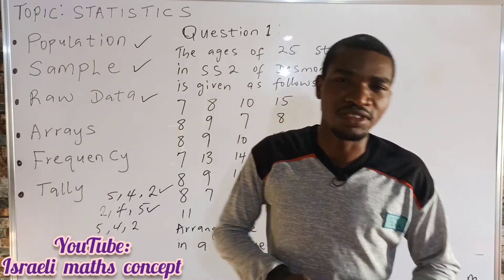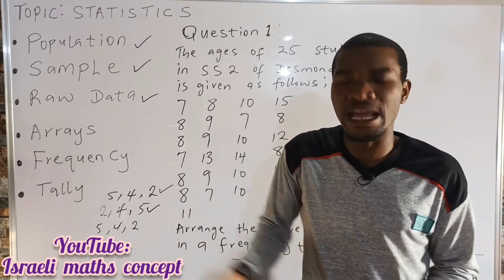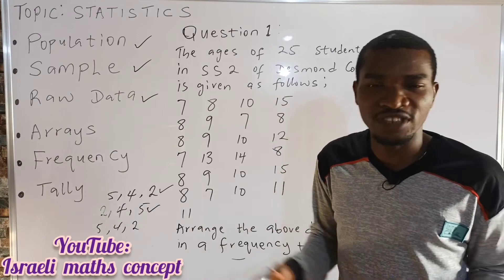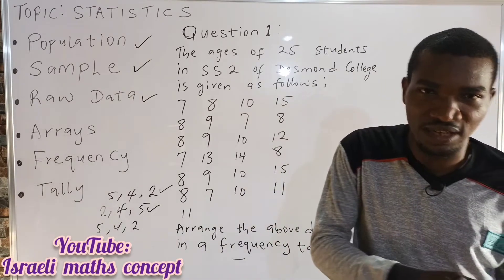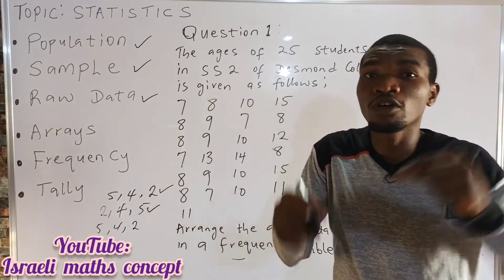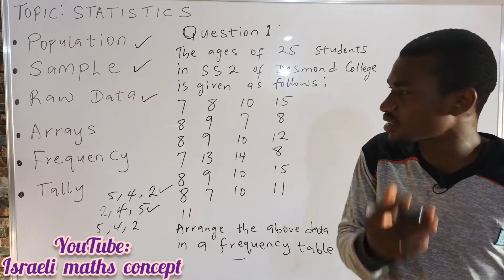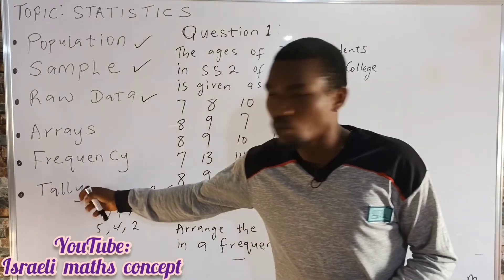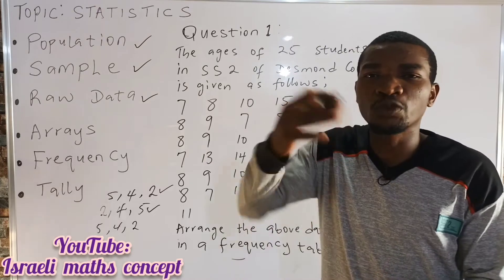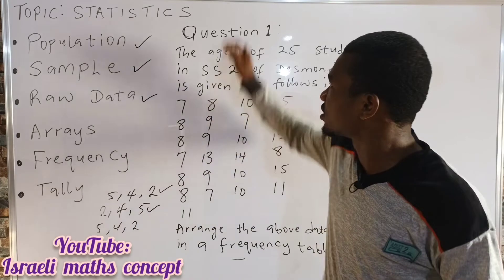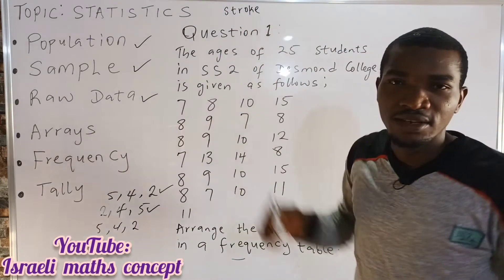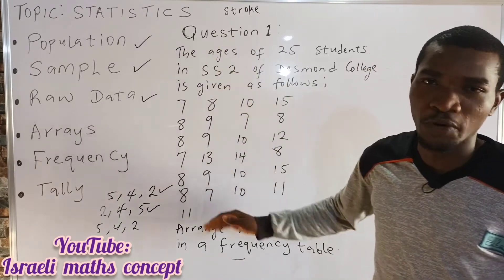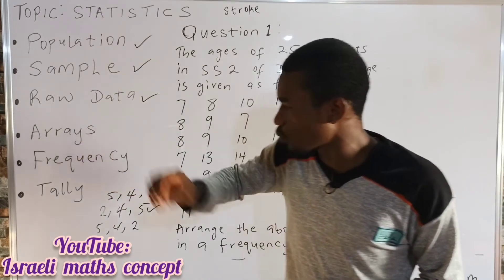Let's get into frequency. What is frequency? Frequency simply means the number of times a given data occurs. If you have varieties of data in your research work and some data resemble another, those data occur more than once — so those data have frequency. Frequency simply means the number of occurrences of a given data. Then the last term is tally. What is tally? Tally simply means the stroke representation of frequency. When we solve the question on the board, it will help us understand both frequency and tally.